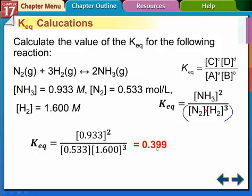If you put everything in right, you should get 0.399. If you didn't get that, carefully look at what you did on your calculator. These brackets are not parentheses — you just need two parentheses: one here and one here, multiplying those two numbers together. This number times this number, and the 1.6 is going to be to the third power. You need parentheses around the outside of the denominator. So you're taking the top number, squaring it, and dividing it by those two numbers multiplied together.